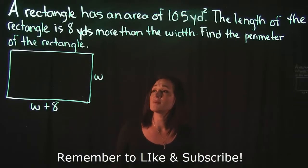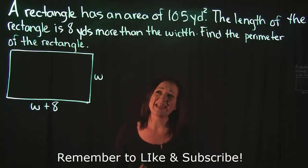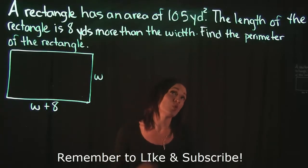For this problem we have a geometry application problem. A rectangle has an area of 105 yards. The length of the rectangle is 8 yards more than the width. It wants us to find the perimeter.